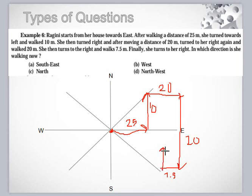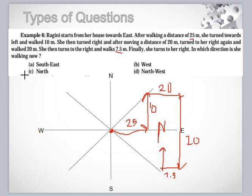Finally she turns toward right. In which direction is she walking? She is walking in the north direction. So here there is no need of the magnitude. The magnitude is only given to confuse you. So C is moving in the northward direction.